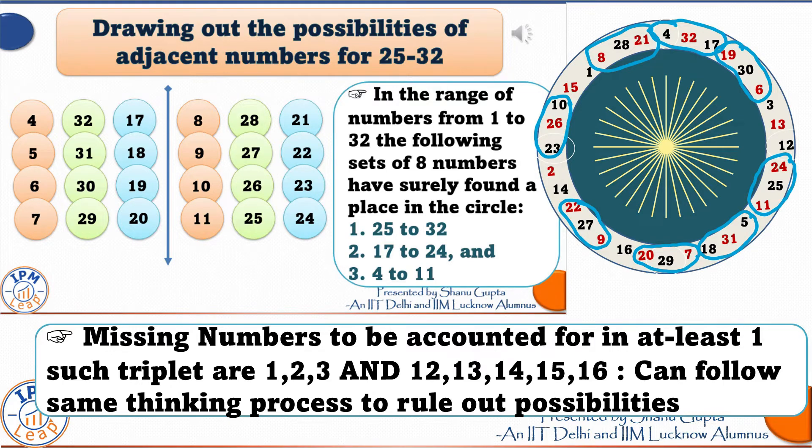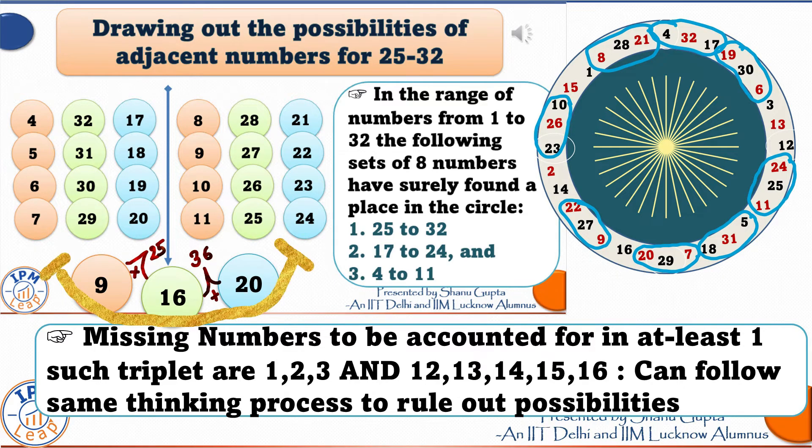Out of these missing numbers, I find 16 quite interesting. 16 is half of 32. So, let us try to see the two numbers before and after 16, shall we? So, when we add another number to 16, the perfect square can be either 25 or else 36.